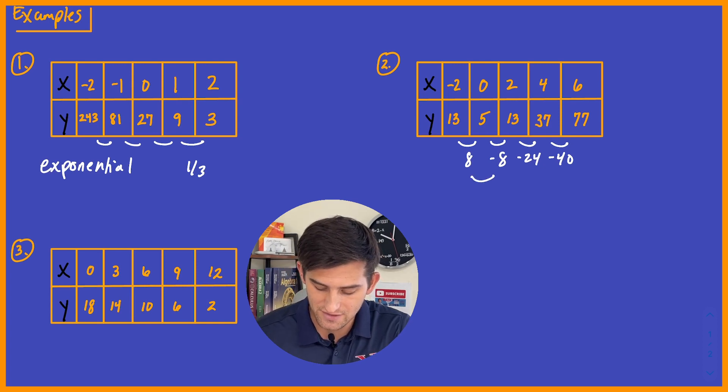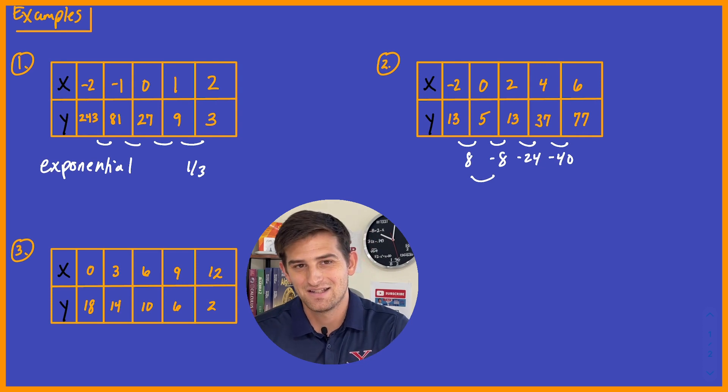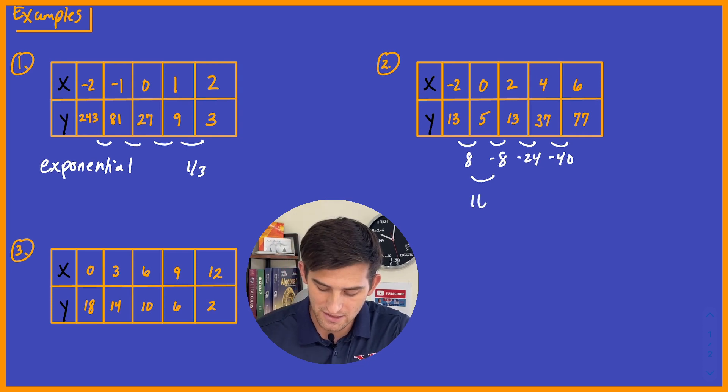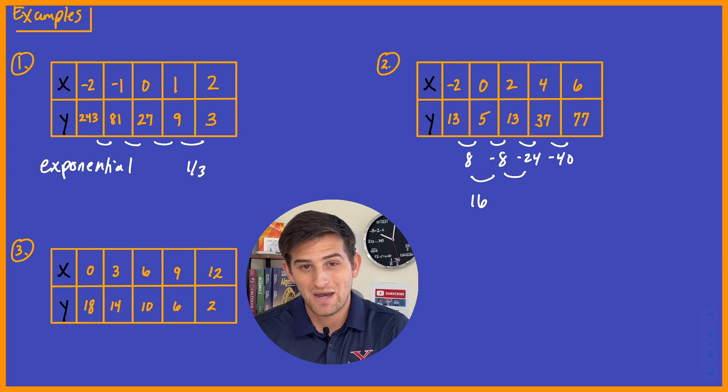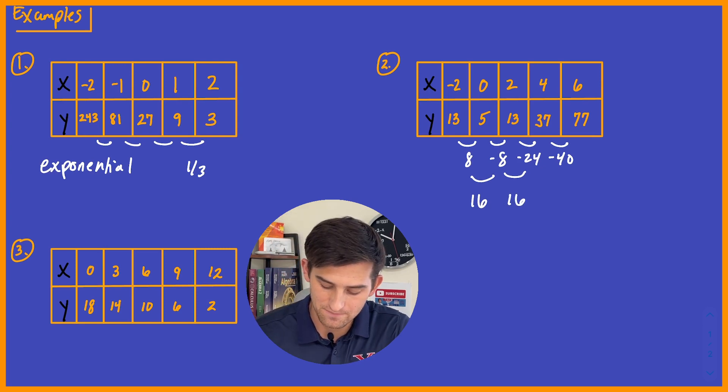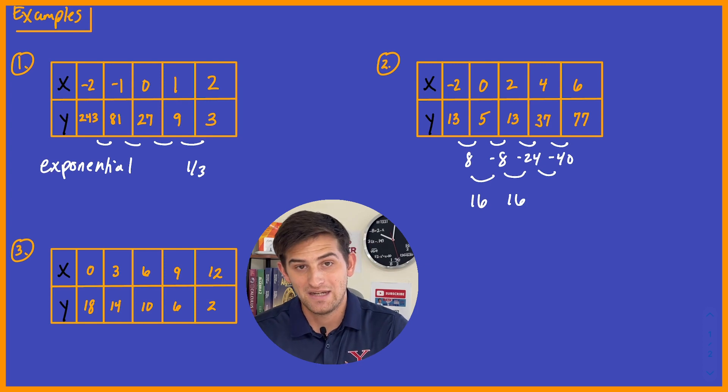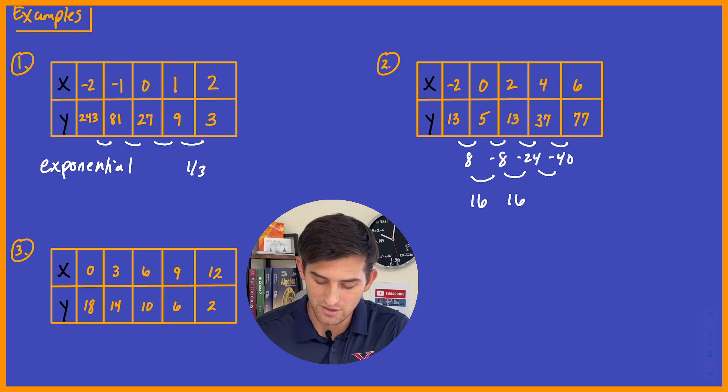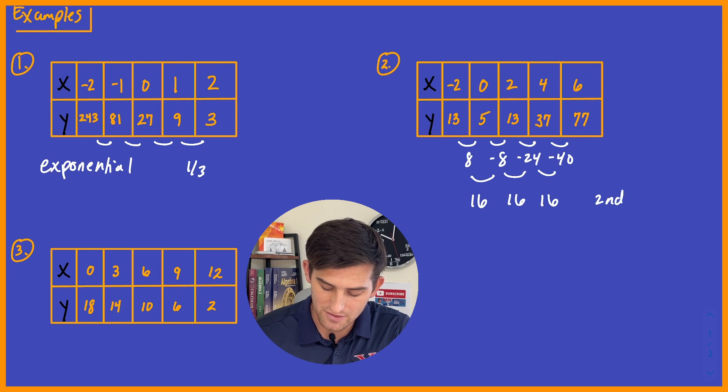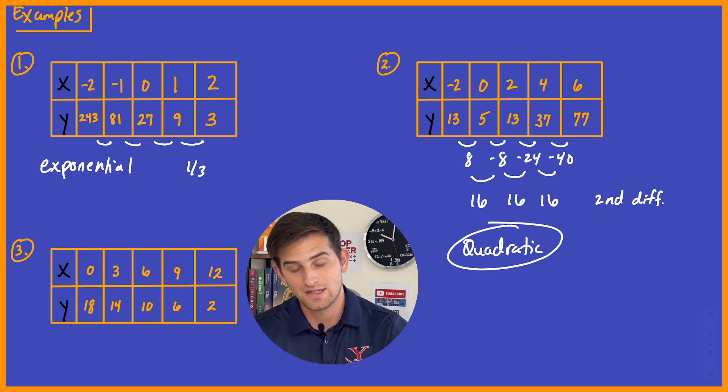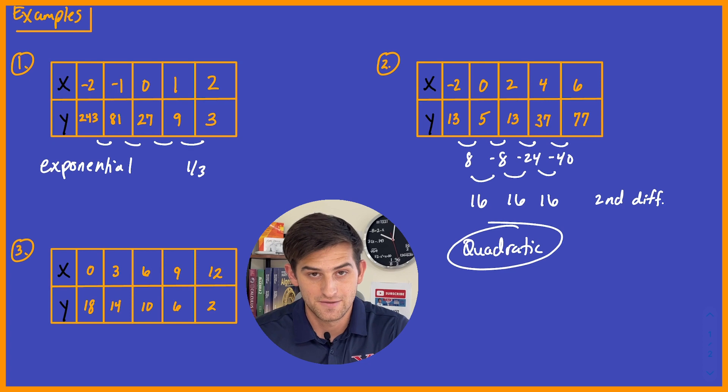So now let's find our next differences. 8 minus negative 8 would become 8 plus 8, which is 16. Negative 8 minus negative 24, negative 8 plus 24, also 16. And negative 24 minus negative 40, or negative 24 plus 40, is 16. So this is what we're talking about with our second differences. In this case, we're going to say this table represents a quadratic function because those second differences are constant.